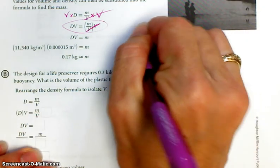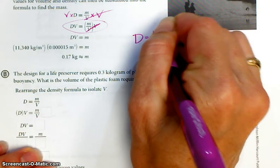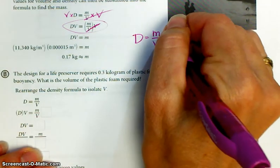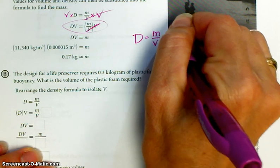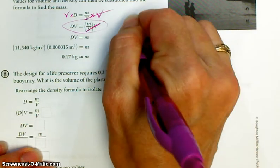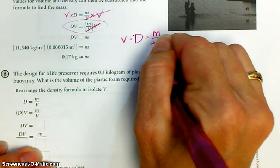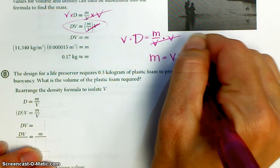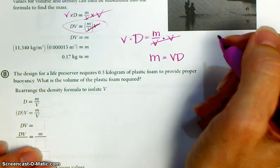So one more time, here's what they did. D equals m over v. To undo the divided by v, you multiply both sides by v. Mass is volume times density, or density times volume.